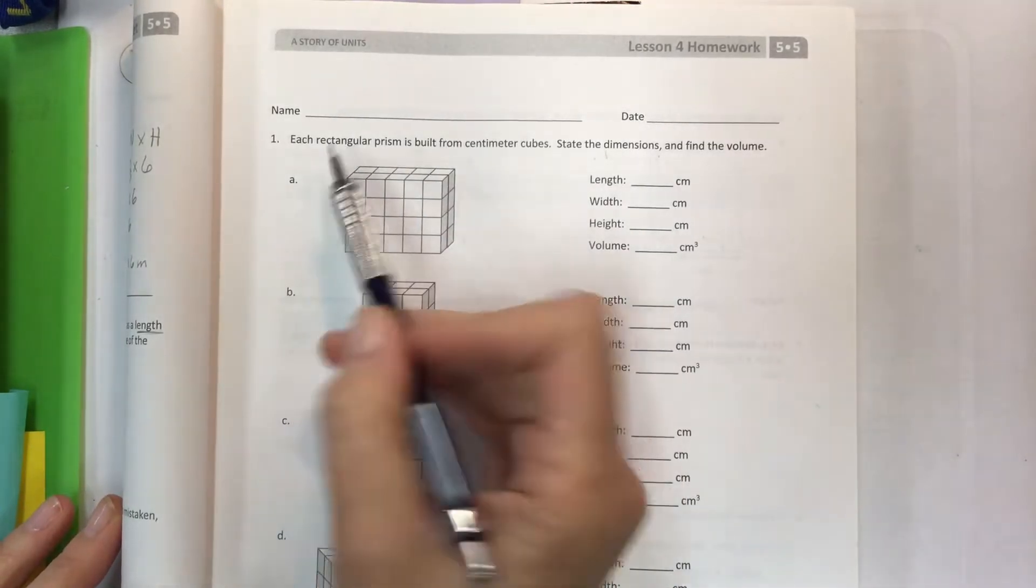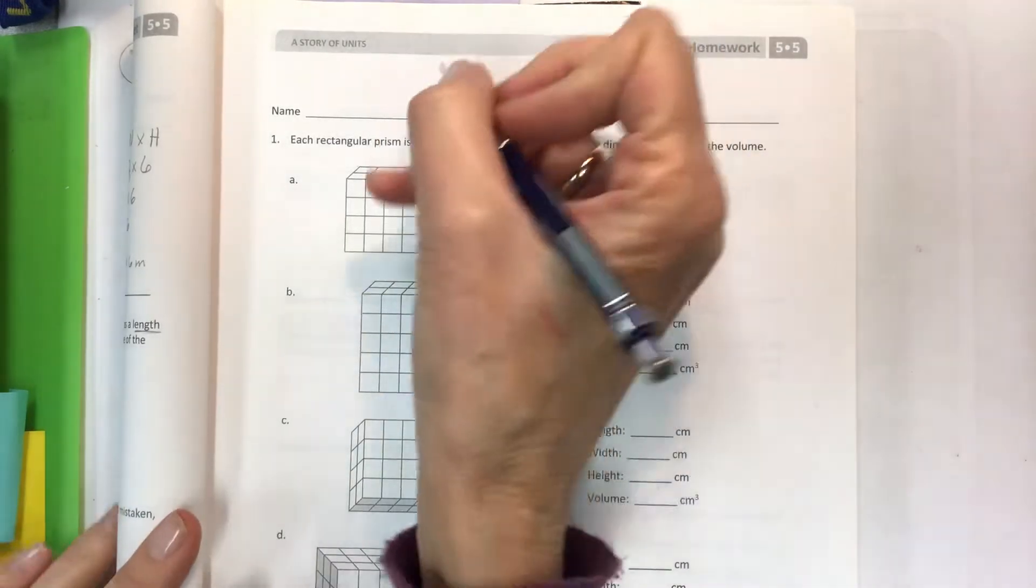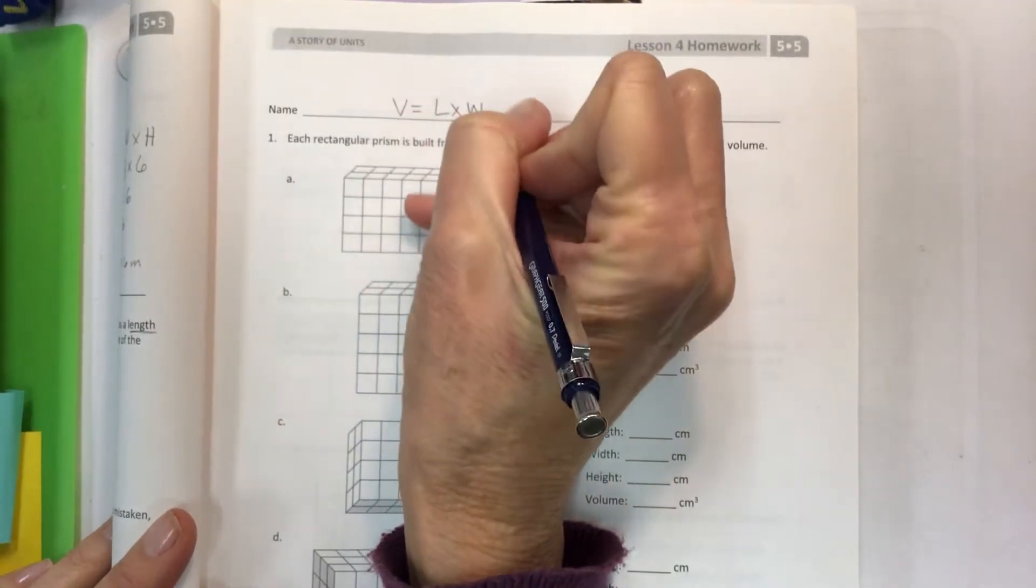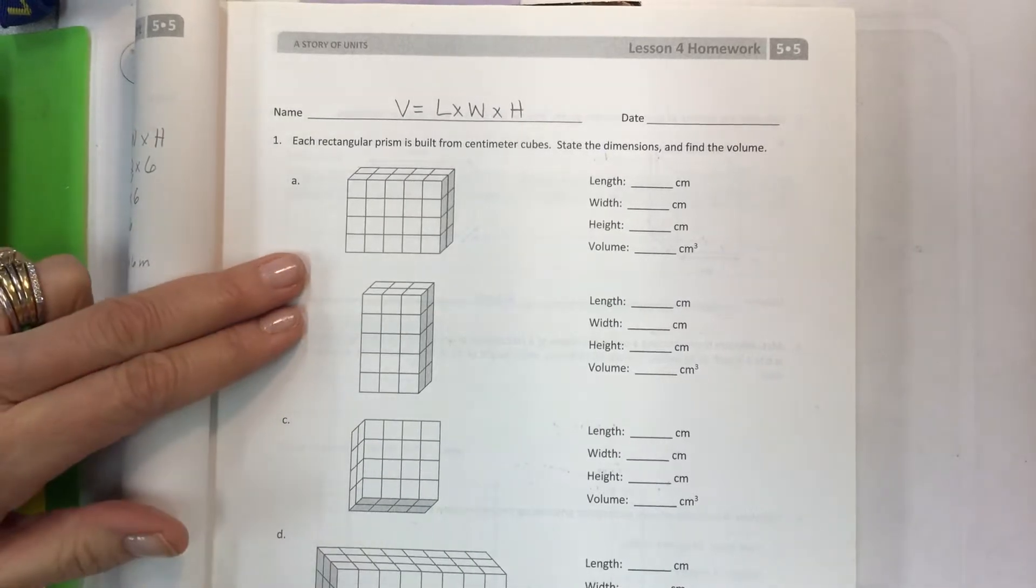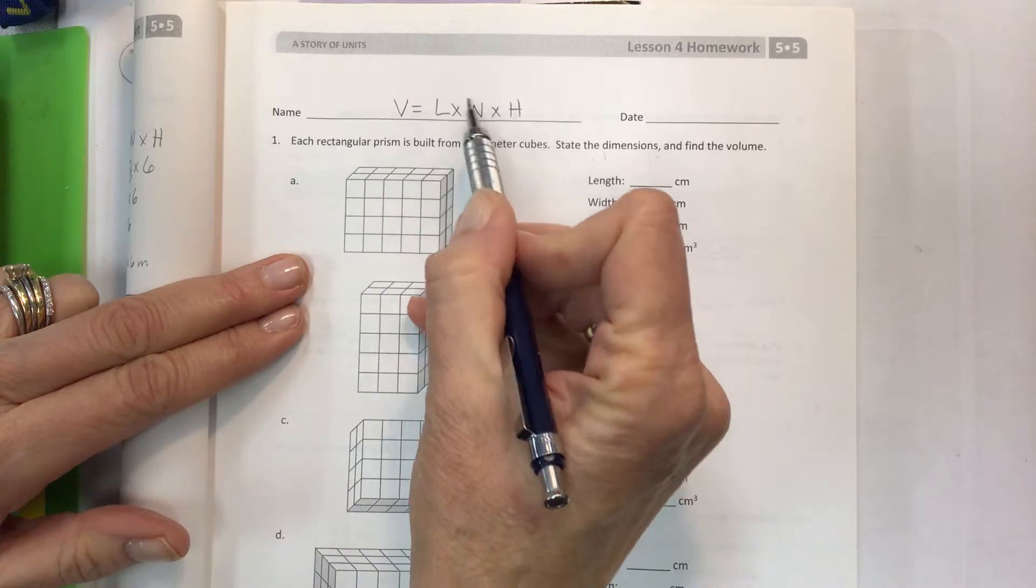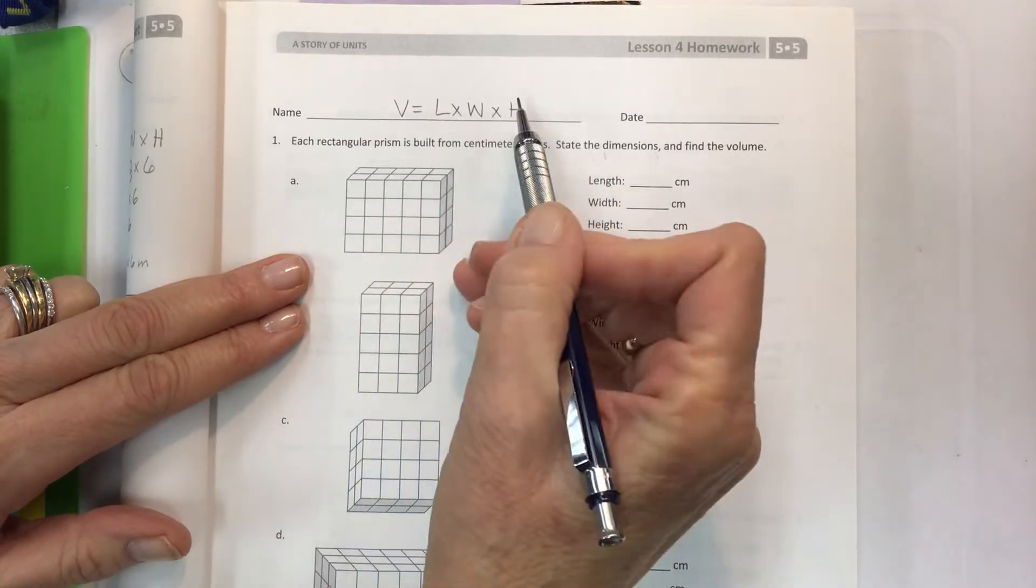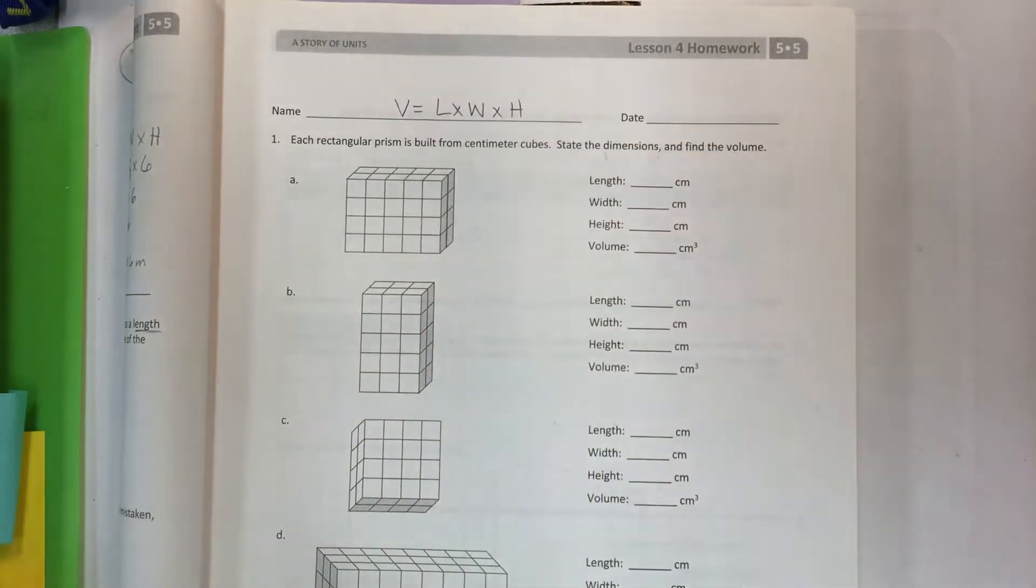So the objective at the bottom of the page is to use multiplication to calculate volume and so we are using a formula. Length times width times height is the formula that we're going to be using constantly to find volume. One thing we're going to talk about is the area of the base uses length times width, but for volume we're actually finding the area of the base and then we're multiplying that by the height. So that's why it works. It makes so much sense.